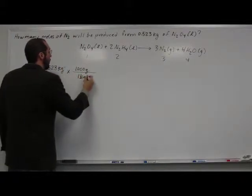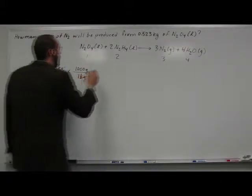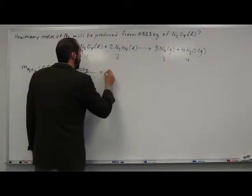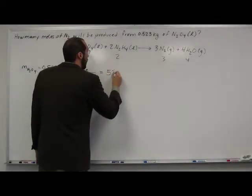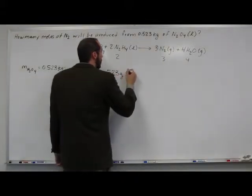So, cancel those two out. And so that equals 523 grams of dinitrogen tetroxide.